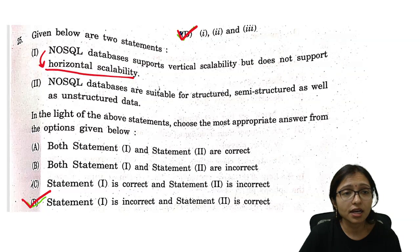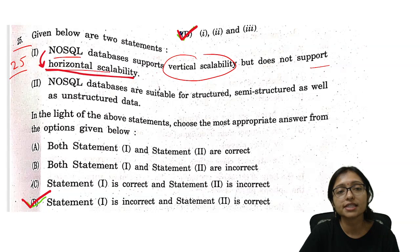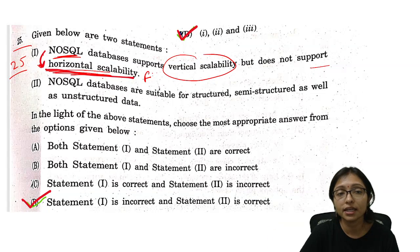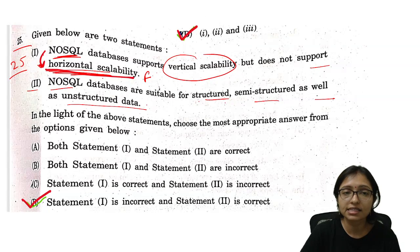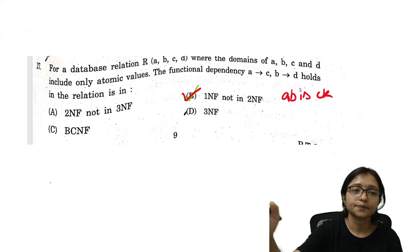Question number 25: NoSQL databases support vertical scalability but not horizontal — this is wrong because NoSQL supports horizontal scalability, so statement one is incorrect. NoSQL databases are suitable for structured, semi-structured, and unstructured data — this is correct, so statement two is correct. Therefore option D is the correct answer.